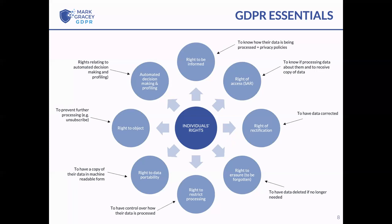If you receive a request on the 29th of January, you have until the 28th of February to deal with it. The right to rectification allows an individual to have their data corrected if they believe the information you hold about them is wrong, which ties in with the principle of keeping data accurate.